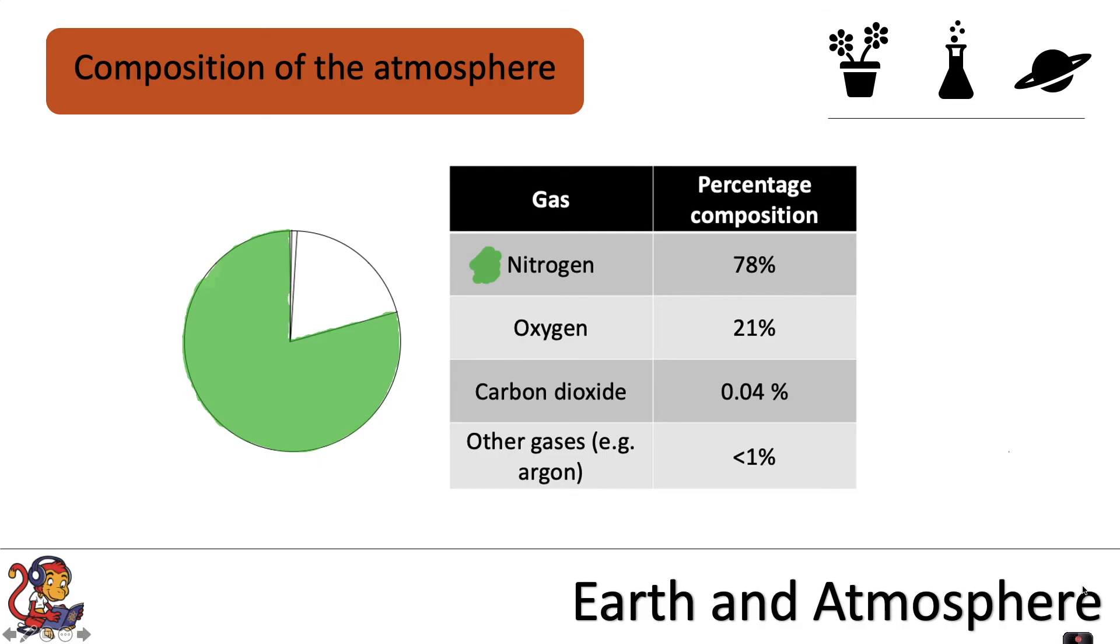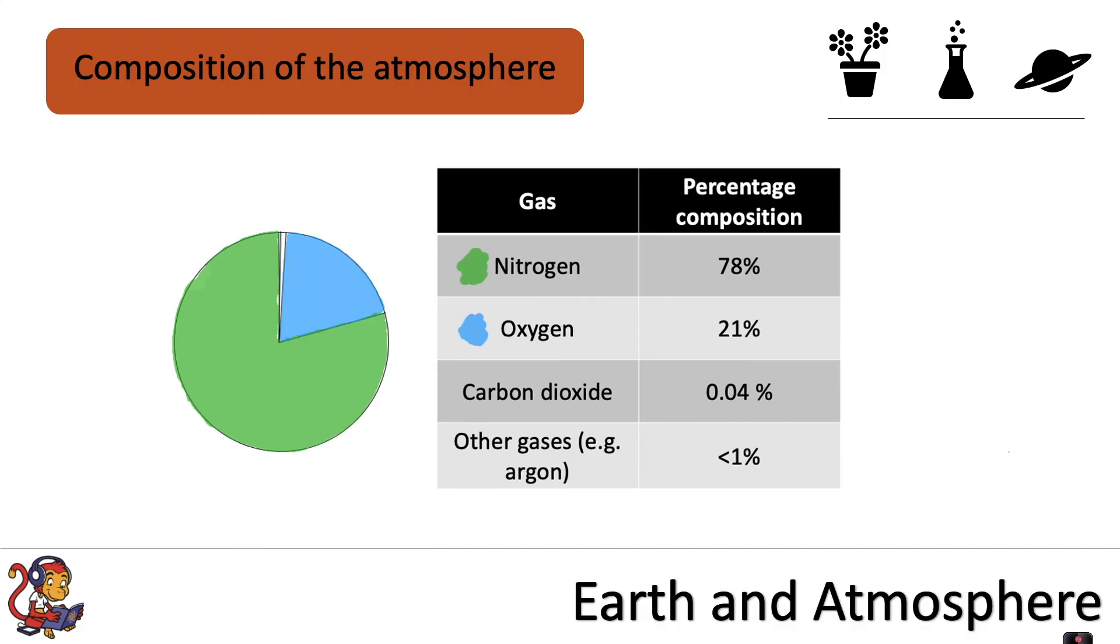Now we're going to look at the composition of the atmosphere. This just means what makes up the atmosphere. So the majority of the atmosphere is made up by a gas called nitrogen. And that is approximately 78% of our Earth's atmosphere. Oxygen takes up approximately 21% of the atmosphere.